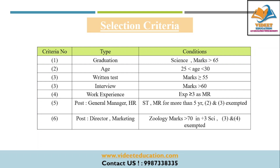Going through the given paragraph, you can identify that the person should be a graduate in the science stream with more than 65 percentage marks. Their age should be between 25 to 30 as of 1st January 2021. They should score at least 55 percentage in the written test and more than 60 percentage in the interview, and they should have at least 3 years of work experience.